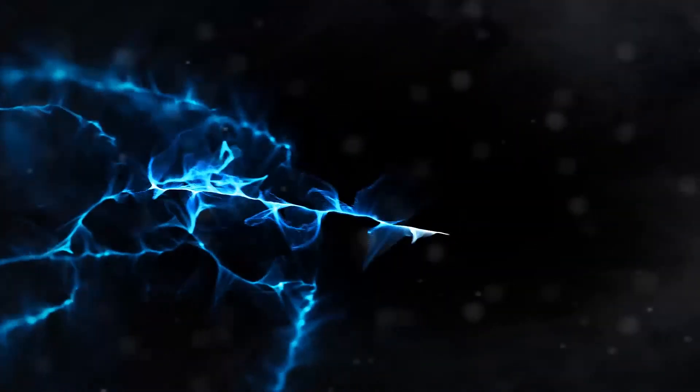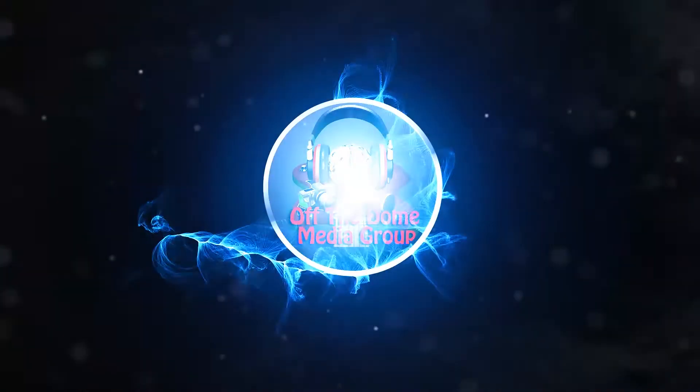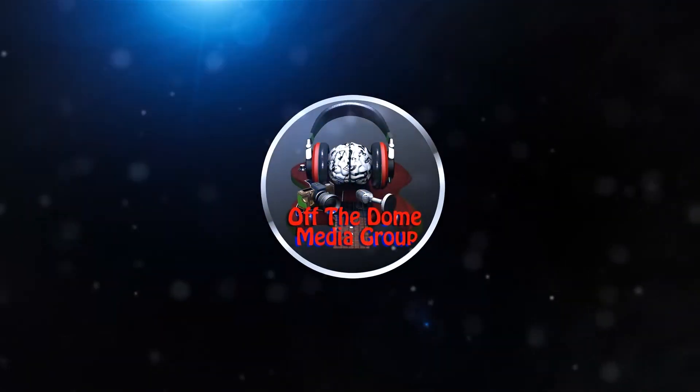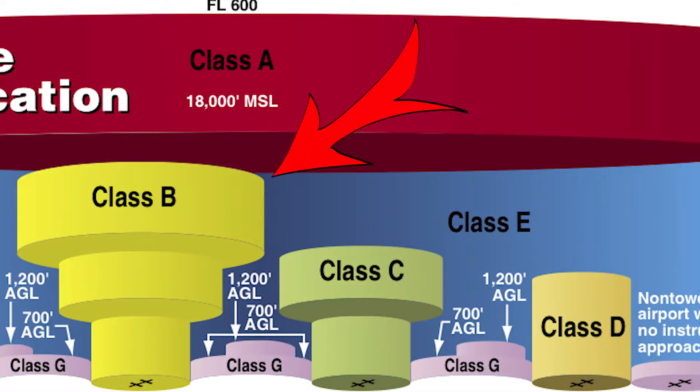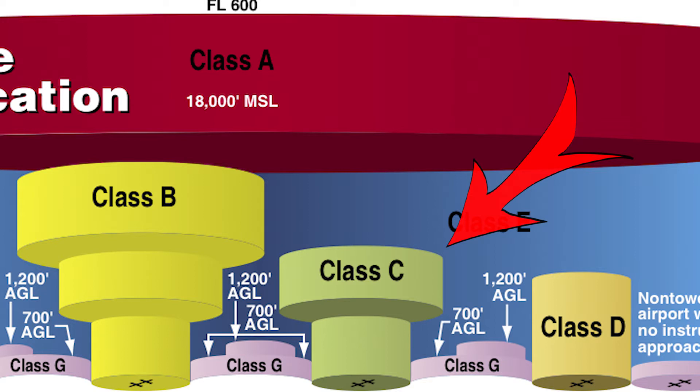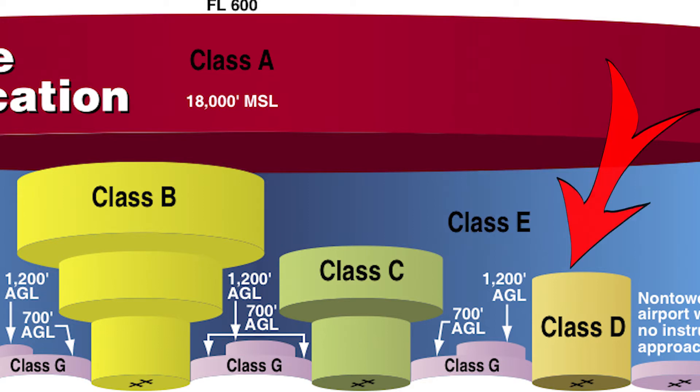Hey guys, in this video we're talking about Class D or Delta Airspace. Art here from the Dome Media Group, and this one is all about Class D or Delta Airspace. Just as a reminder, Class B or Bravo is the largest airspace, the next step down or smaller will be Class C or Charlie, and even smaller is Class D or Delta Airspace.